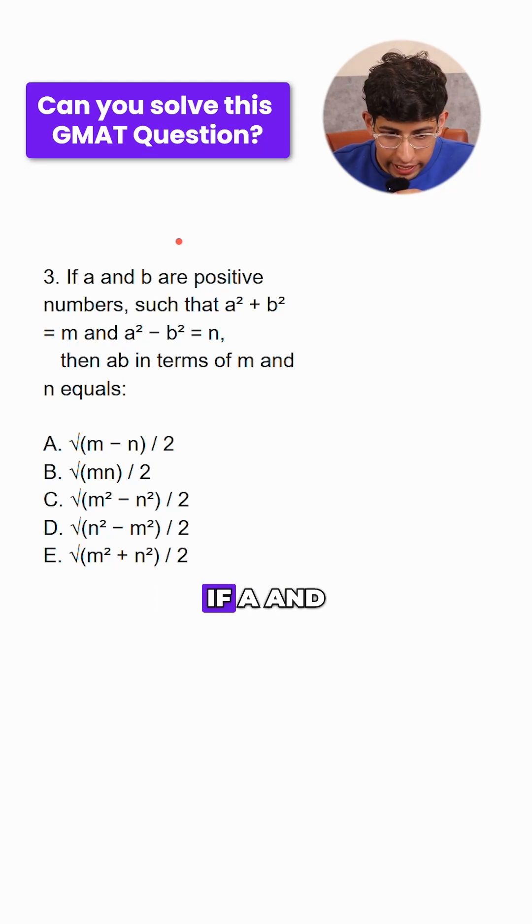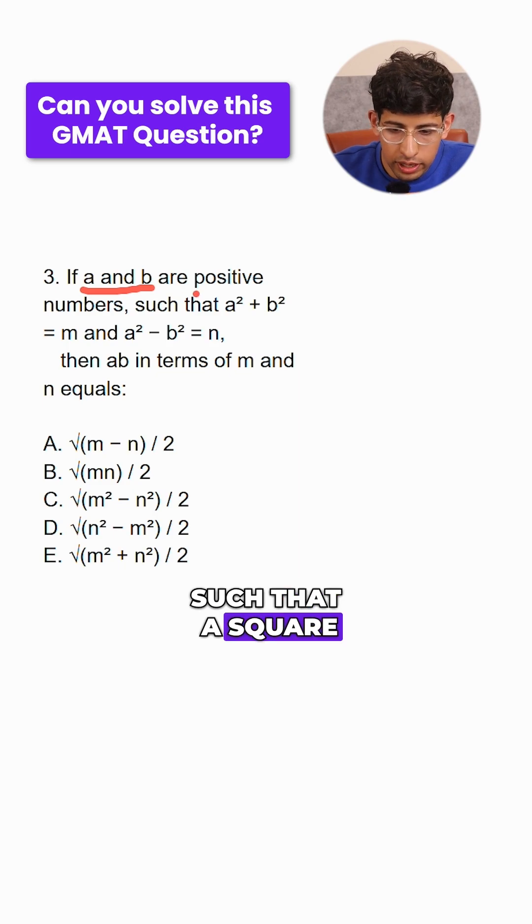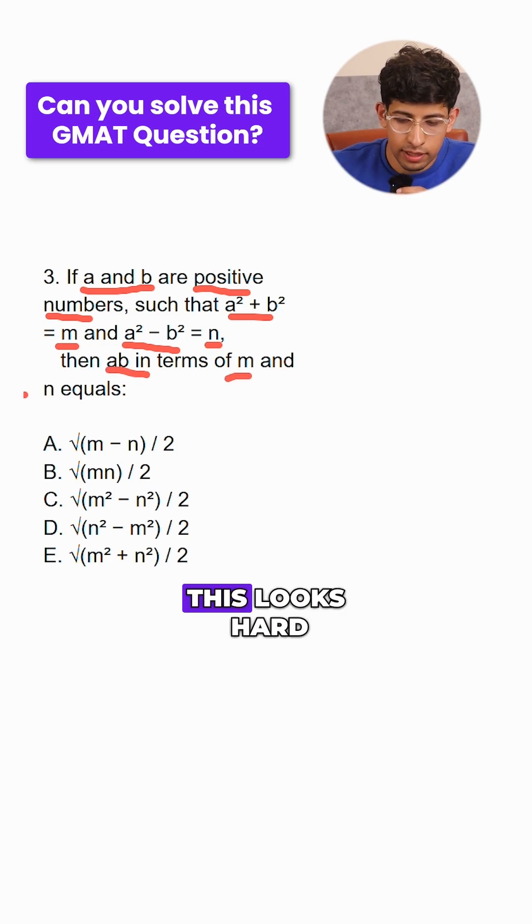This question says: if a and b are positive numbers such that a² + b² = m and a² - b² = n, then ab in terms of m and n equals what?